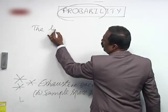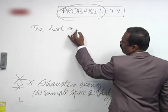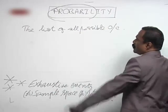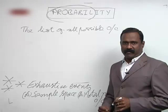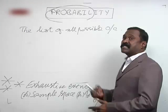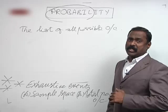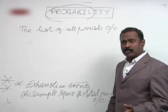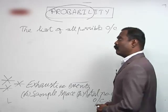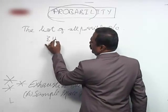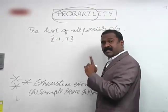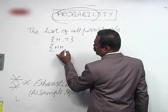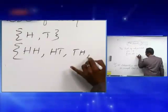The list of all possible outcomes are simply the list of all possible results. If I throw the coin once, it is either head or tail. If I throw the coin twice, the outcomes are HH, HT, TH, TT.